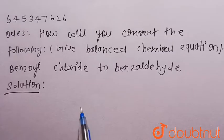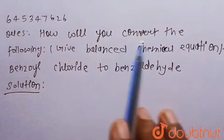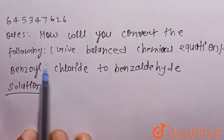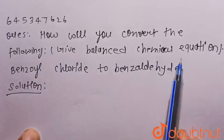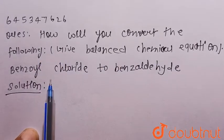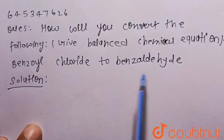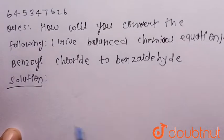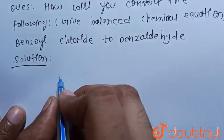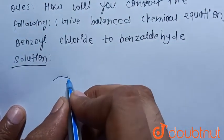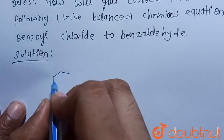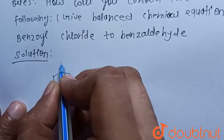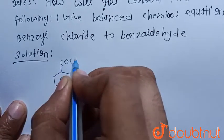Hello everyone. Consider the given question: how will you convert the following? We have to give the balanced chemical equation for the conversion of benzoyl chloride to benzaldehyde. Benzoyl chloride has the structure PhCOCl.